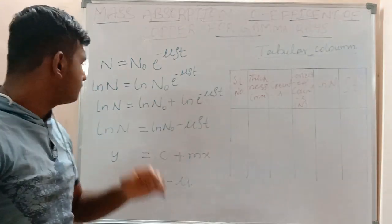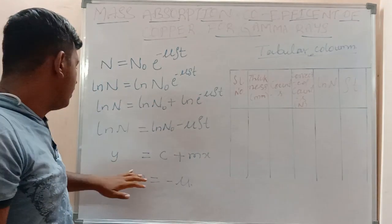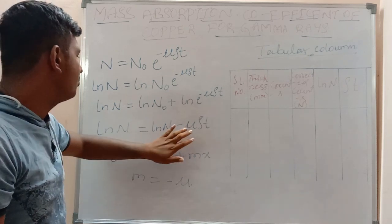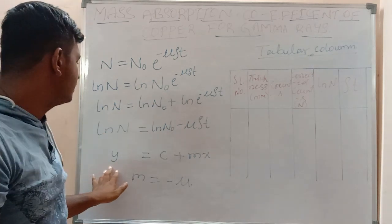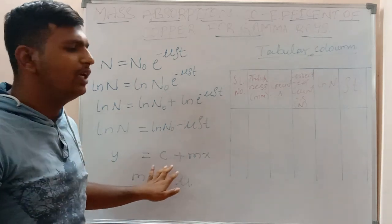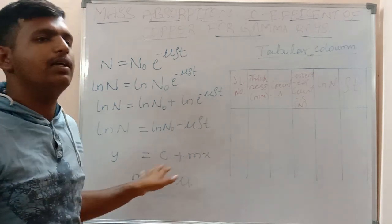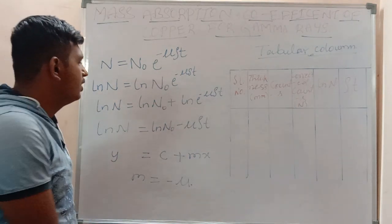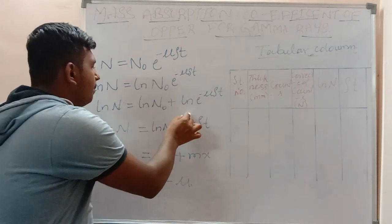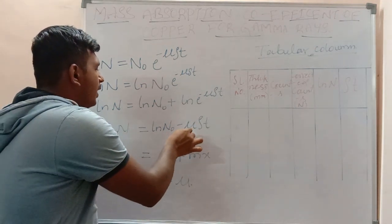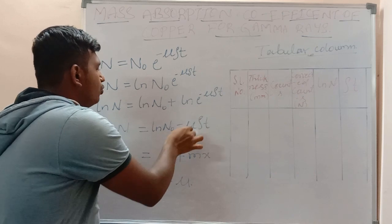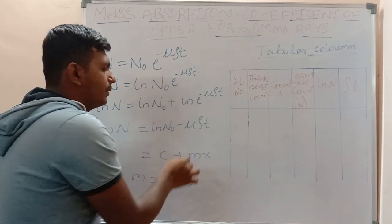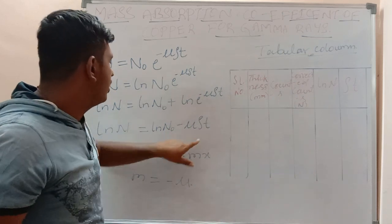To find the mass absorption coefficient, we compare this equation with y = mx + c (or c + mx). The equation ln(N) = ln(N₀) − μρt is in linear form, so plotting ln(N) versus ρt will yield a straight line from which μ can be extracted.